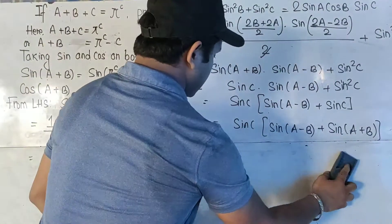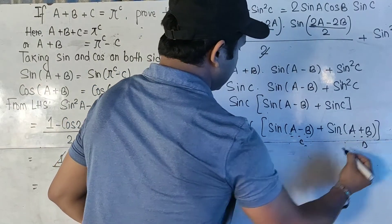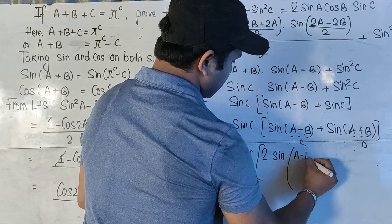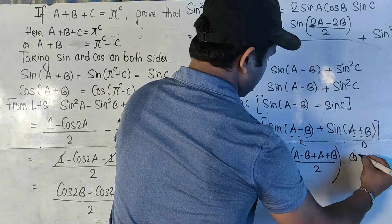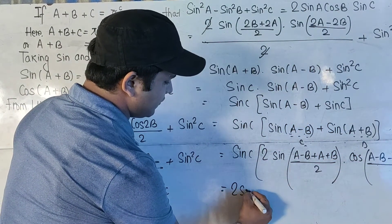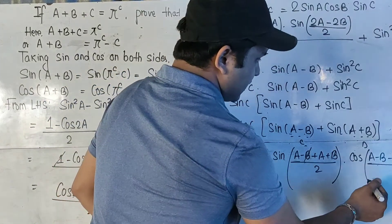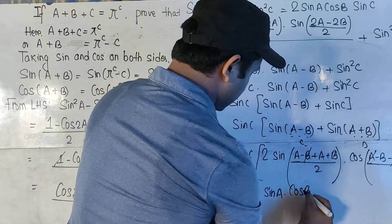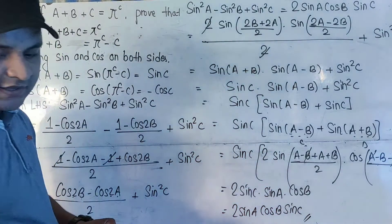Alternatively, suppose A-B = C and A+B = D. The formula becomes sinC + sinD = 2·sin((C+D)/2)·cos((C-D)/2). Solving: (A+A)/2 = A and (-2B)/2 = -B, and cos(-B) = cosB. In this way we can also prove 2sinA cosB sinC.